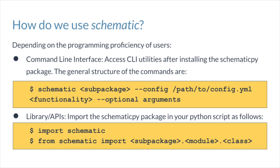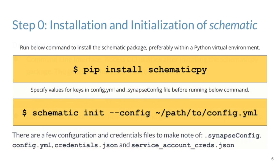Currently, the only data repository supported by Schematic is Synapse, so all of its utilities are built considering Synapse is where the user wants to store their datasets. The Schematic tool is distributed as a Python package, so the installation process is running a simple pip install. Most of the functionalities in Schematic are built around a central schema.org-based ontology with entities, properties, and relationships that can describe various biomedical objects. Before we get into the various steps of the data curation lifecycle, we need to make sure we have the right set of credentials and configuration files that are necessary for Schematic to work. Follow the documentation to make sure you have the right configuration.